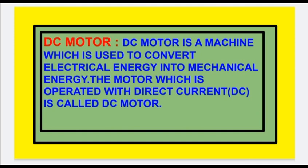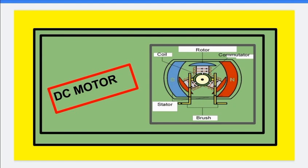A DC motor is a machine which converts electrical energy into mechanical energy. The motor which is operated with direct current is called a DC motor. This is the pictorial representation of a DC motor. The parts of a DC motor include the rotor, stator, brushes, commutator, and coils. The rotating part of the machine is the rotor, and the stationary part is the stator.